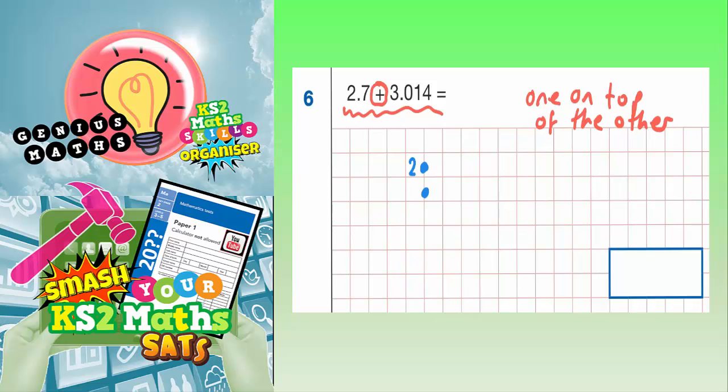Then we've got 2.7, and then underneath we've got 3.014. And we're adding them together.